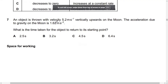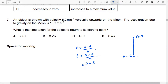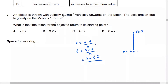An object is thrown with velocity 5.2 meters per second vertically upwards on the moon. Final velocity is zero, initial velocity is 5.2. If a student takes g as 1.62, the answer for time would come out negative. So here you need to take g as negative — that is, g = minus 1.62.